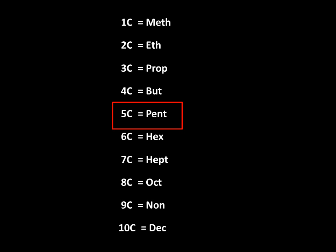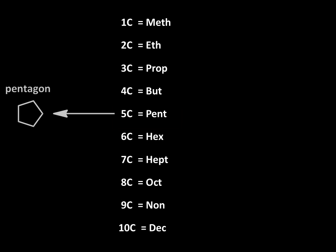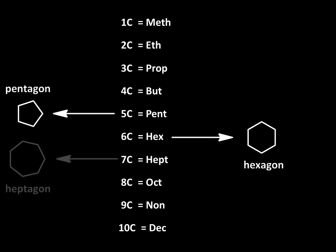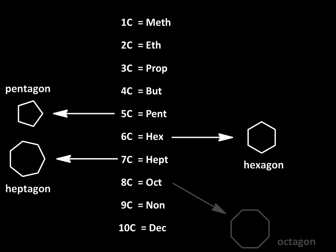Pent indicates five carbons. There's a different prefix for each number of carbons. From five carbons onwards, there's a link back to your high school geometry. So just as a pentagon has five sides, pentane has five carbons. Similarly, hexane to hexagon, heptane to heptagon, and so on.